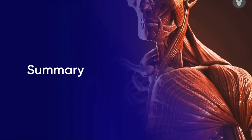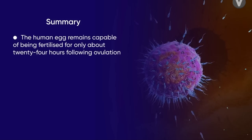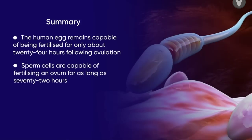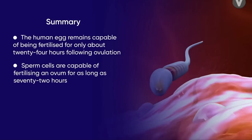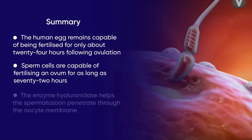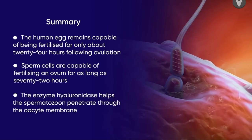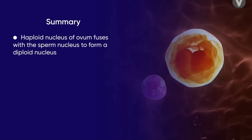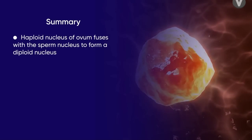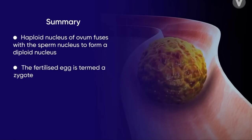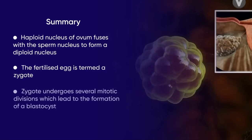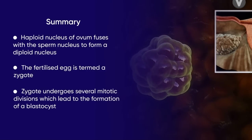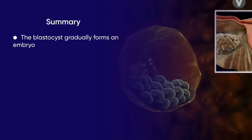Let's summarize. The human egg remains capable of being fertilized for only about 24 hours following ovulation. Sperm cells are capable of fertilizing an ovum for as long as 72 hours. The enzyme hyaluronidase helps the spermatozoon penetrate through the oocyte membrane. The haploid nucleus of the ovum fuses with the sperm nucleus to form a diploid nucleus. The fertilized egg is termed a zygote. The zygote undergoes several mitotic divisions, which leads to the formation of a blastocyst. The blastocyst gradually forms an embryo.